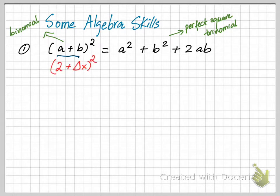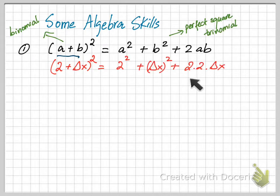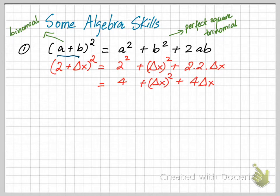So if you have 2 plus delta x and you square it, according to the formula you get 2 squared plus delta x squared plus 2 times 2 times delta x. If you simplify it you will get 4 plus delta x squared plus 4 times delta x. And if you replace the plus by a minus, you replace the corresponding signs accordingly.